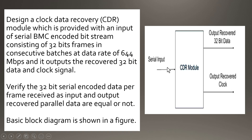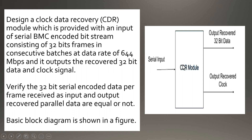So in the first step, the CDR has to recover that clock from the data itself. Thereafter it has to recover the actual data, because each frame consists of 32 bits of data. So data for each frame is supplied at the 32-bit output lines of the CDR.